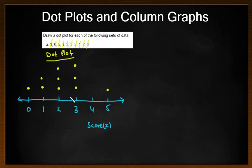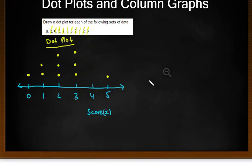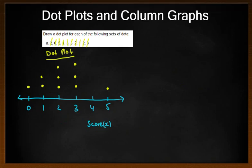So, again, I can see there that the most common scores are two and three. The highest minus the lowest is five, take away zero. We can now do a lot of information off that graph. Now, let's have a look at the column graph.